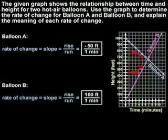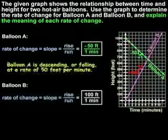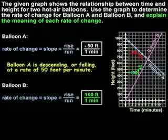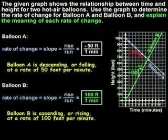Finally, we're asked to explain the meaning of each rate of change. Since the rate of change of balloon A is negative 50 feet over 1 minute, this means that balloon A is descending, or falling, at a rate of 50 feet per minute. Since the rate of change of balloon B is positive 100 feet over 1 minute, this means that balloon B is ascending, or rising, at a rate of 100 feet per minute.